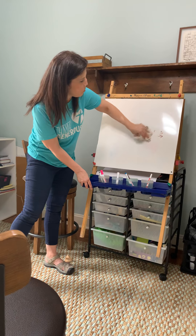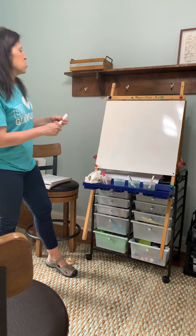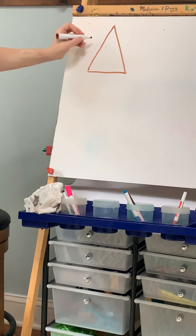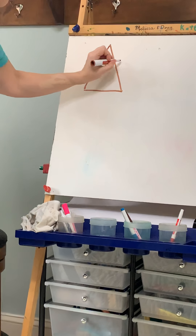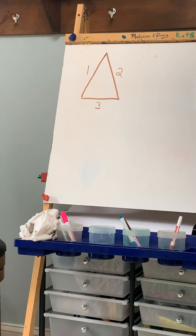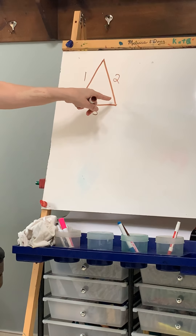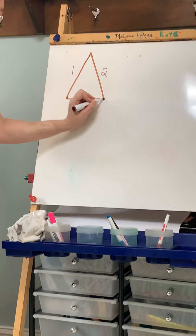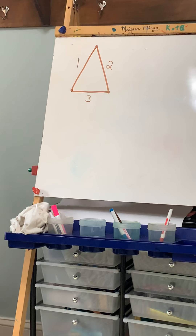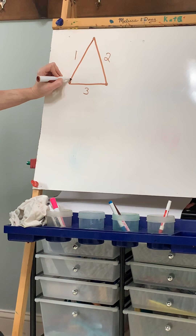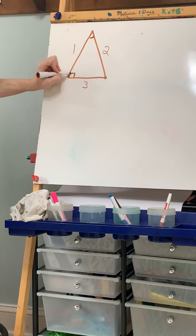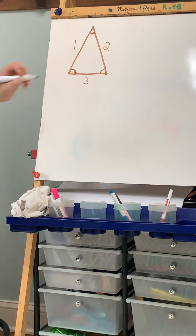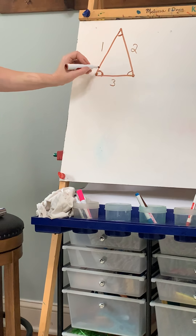They're going to give you two shapes to recognize today. The first shape is a triangle. In a triangle, I drew one, two, three lines — they have stopping points, and the three stopping points are the corners. That also means I'm going to have three angles, one at each corner. So in a triangle, I have three lines and three angles.